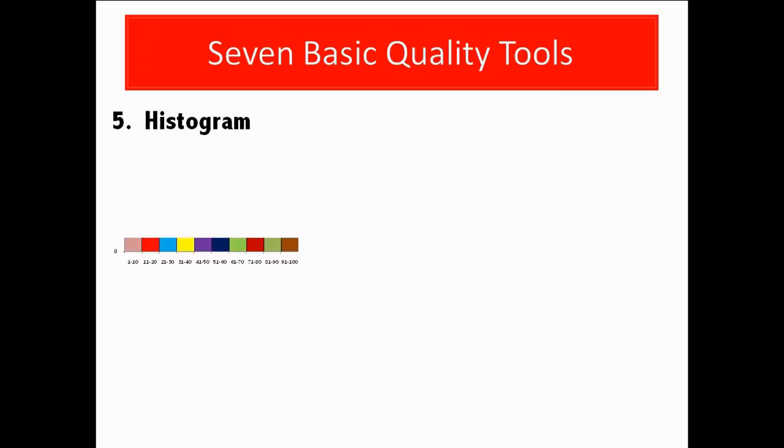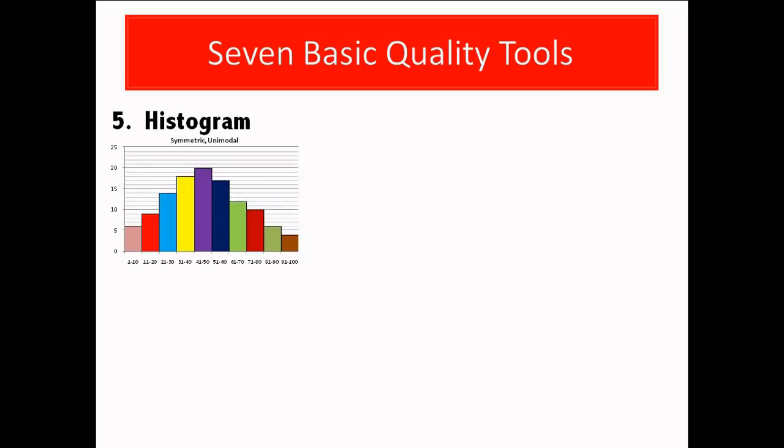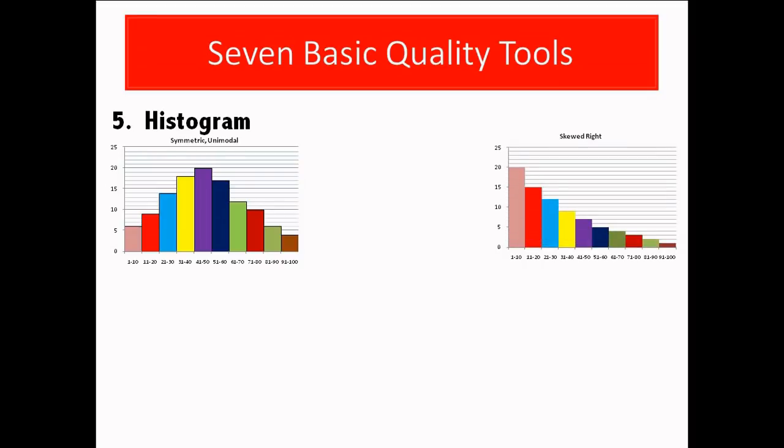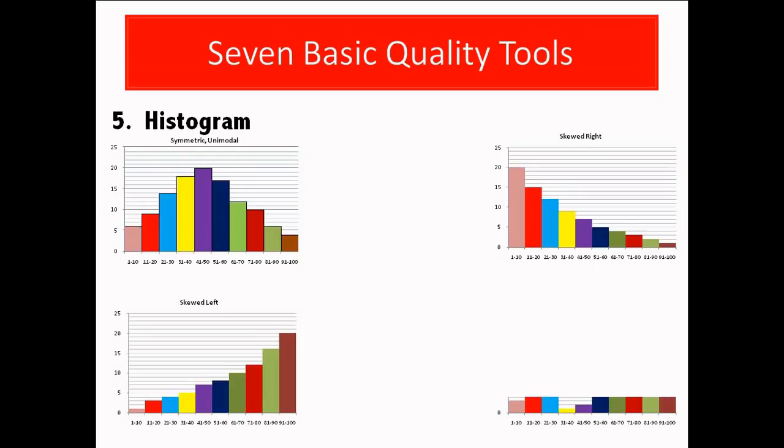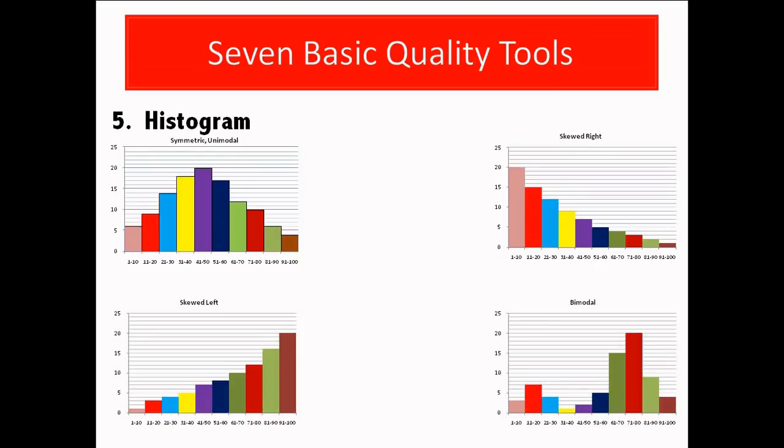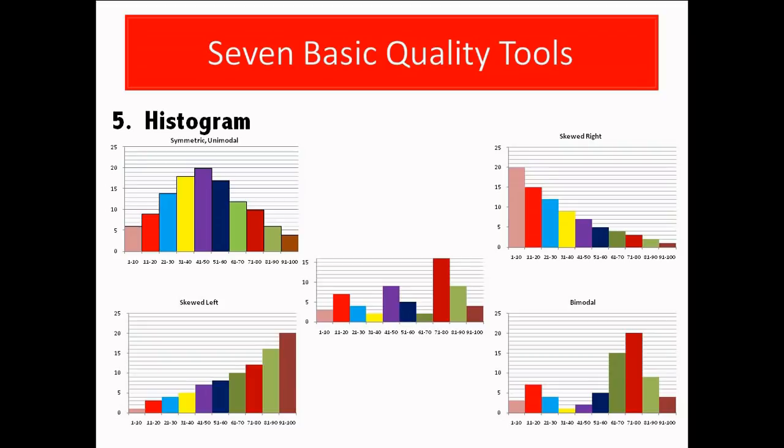According to the shape of the distribution of data there are different types of histograms that can be seen. This is a symmetric, unimodal histogram. This histogram is skewed right, and this one is skewed left. This histogram has a bimodal distribution and last histogram, which is a multimodal histogram.